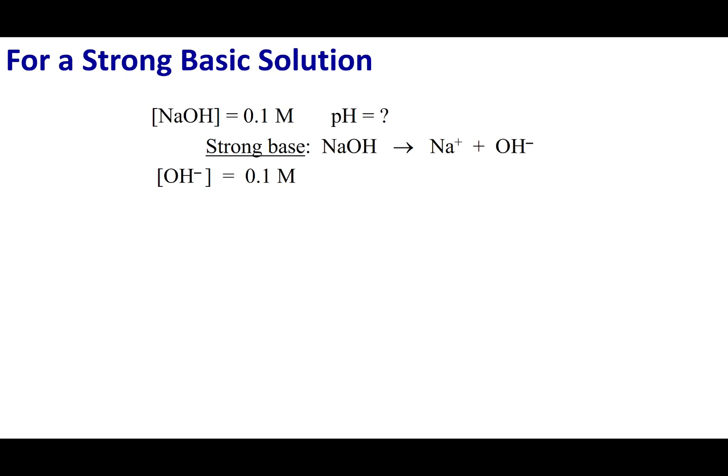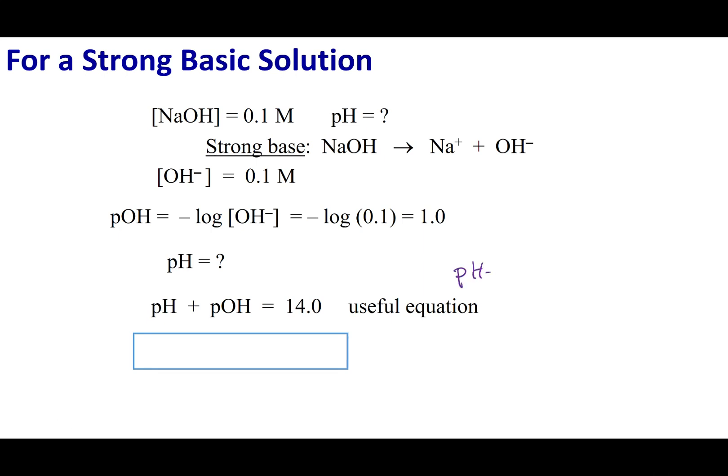Let's go ahead and take the negative log of that. If I take the negative log of that, I get my pOH being 1. But remember, in water, if I want to figure out the pH, I know that the pH plus the pOH equals 14. So that means the pH is going to equal 14 minus the pOH. If I put 1 in for my pOH, I get a pH of 13.